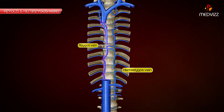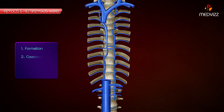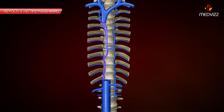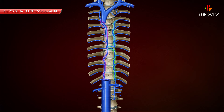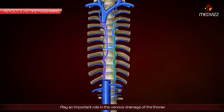Azygous and Hemi-Azygous Veins. In this topic, we will be discussing the formation, course, termination, and tributaries of the azygous system of veins. The azygous system of veins consists of the azygous, hemiazygous, and accessory hemiazygous veins. These veins lie anterior to the thoracic part of the vertebral column and play an important role in the venous drainage of the thorax.